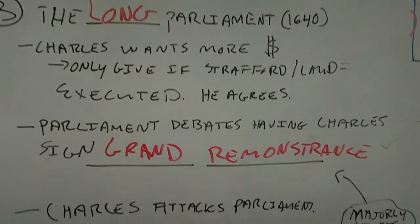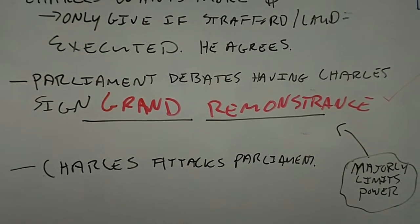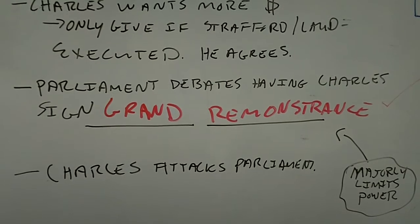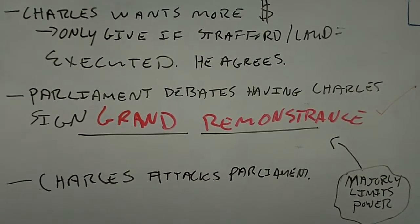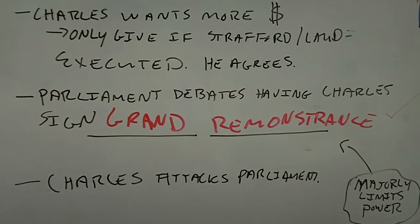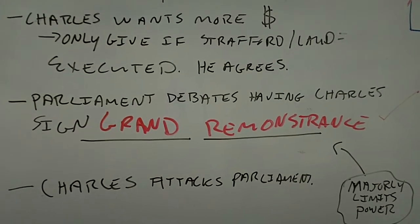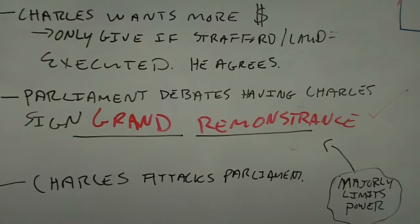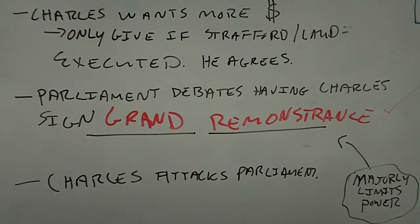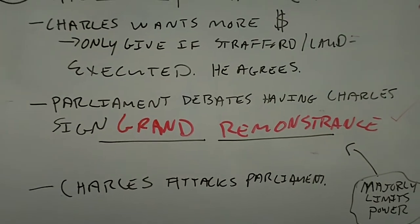Parliament then, in the Long Parliament, decides to debate the Grand Remonstrance — a bill that would have severely limited Charles's power and given Parliament supremacy. It passes only by a narrow margin among the voting nobles. Charles sees this indecision and decides to invade Parliament with 500 people — he gets his army and invades Parliament, which was totally illegal at the time. To this day, the King of England is not allowed to enter the House of Commons because of this incident. At this point, the Civil War has started: Parliament decides to flee and create its own army, and Charles goes north to create his own army, leading to a very long and drawn-out civil war.